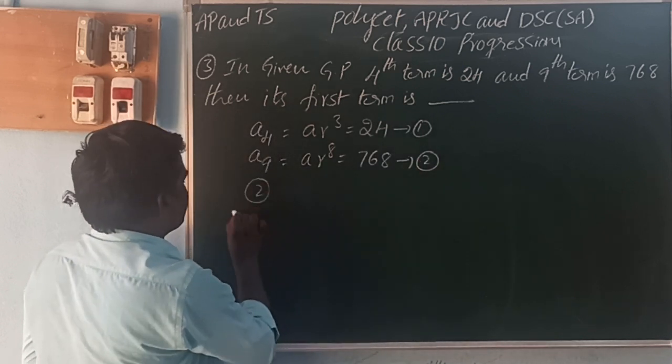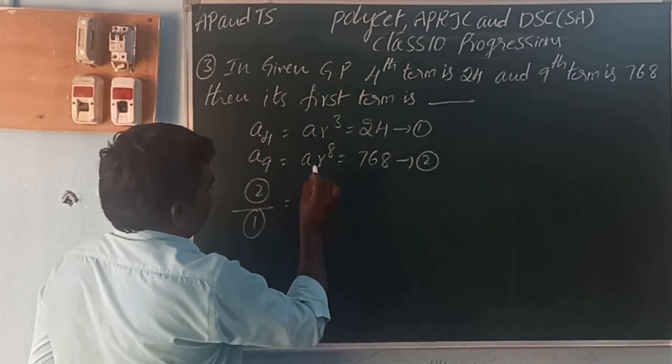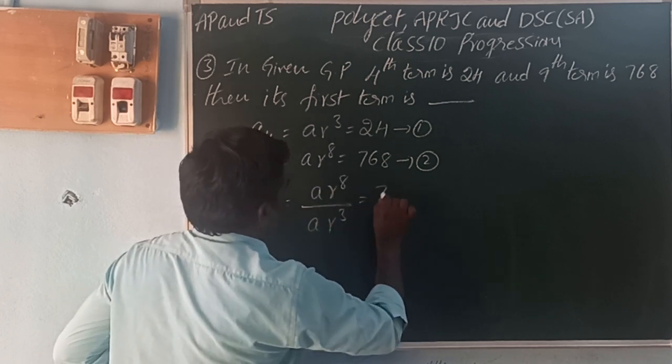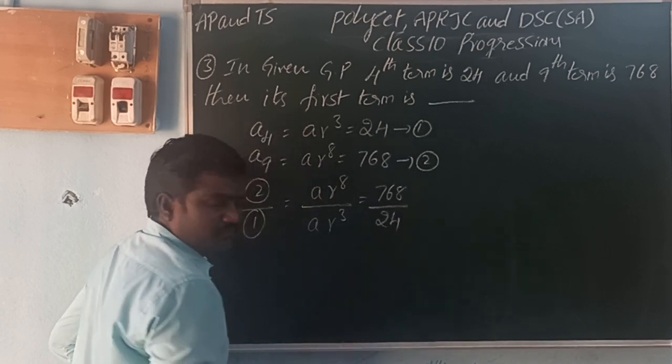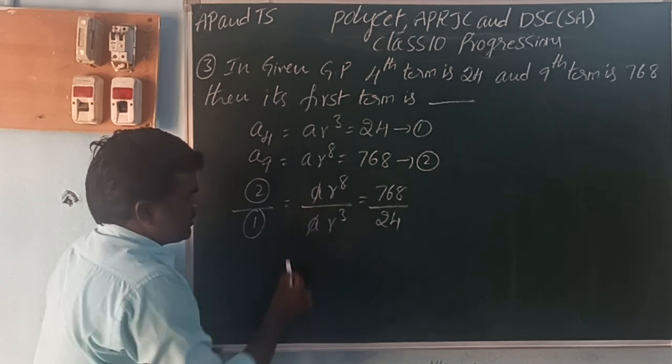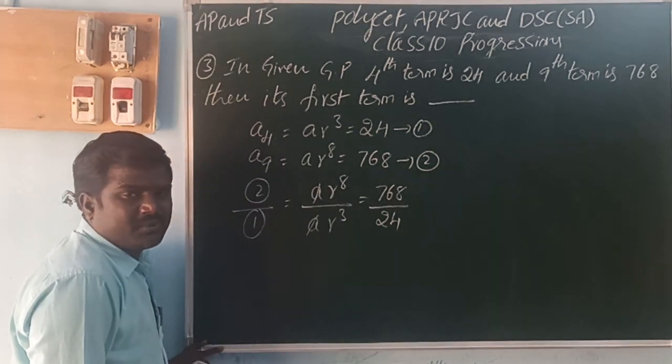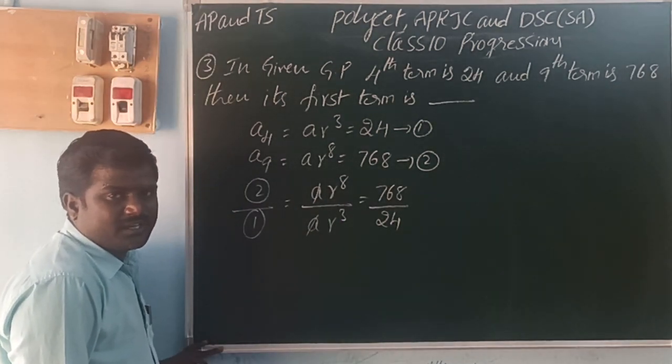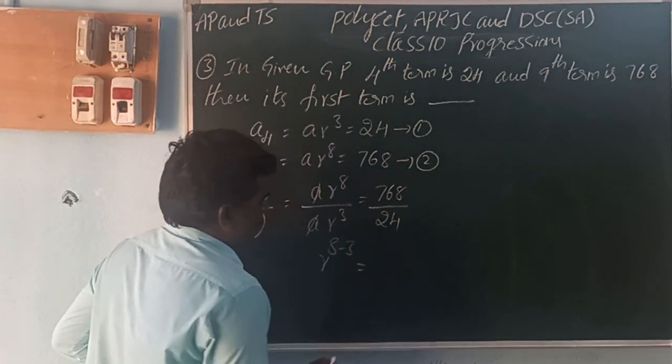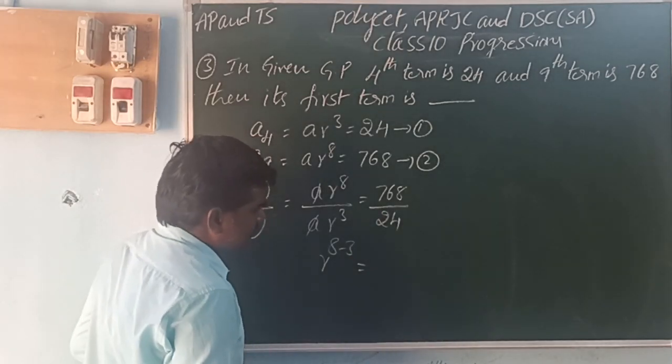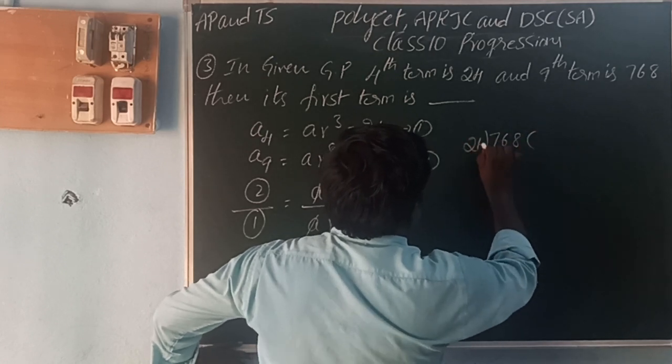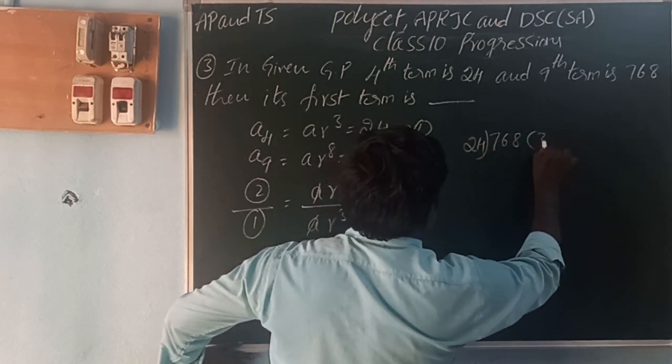A * R^8 by A * R^3 = 768 by 24. A, A cancel. We have to follow A power M by A power N equals A power M minus N. That is R^(8-3) = R^5. 24 into 768 divided by 24. 24 into 3 is 72, 24 into 4 is 8.